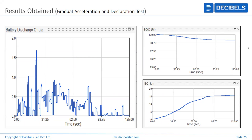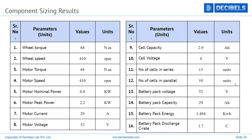After running all results from the model, you get values for wheel torque, wheel speed, motor nominal power, peak power, current, voltage, and cell capacity. These parameters are derived directly from the model's end results, giving you specific numbers. Then you go to component manufacturers or vendors and procure components based on these numbers — rather than blindly procuring a component you're unsure about, which could fail and require costly replacement.